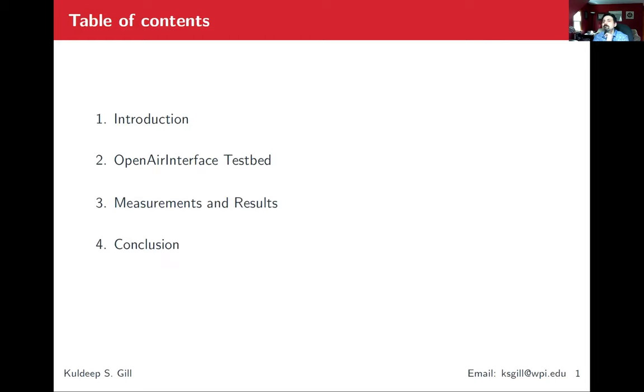These are the table of contents. First, I'm going to start with the introduction where I'm going to explain the Bumblebee dynamic spectrum access model. Then I'm going to go towards the open interface testbed, the open source platform which we are using to test our algorithm for cellular V2X communication system. Then in section three, I'm going to present our measurements and results. And finally, I'll conclude this presentation with section four.